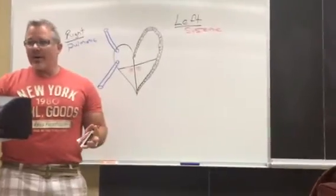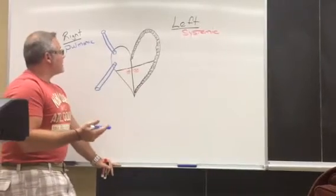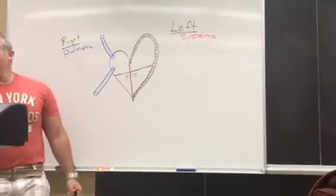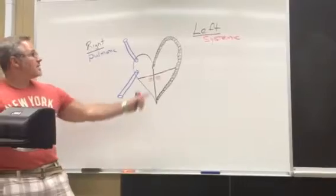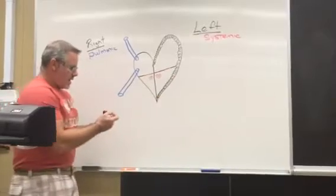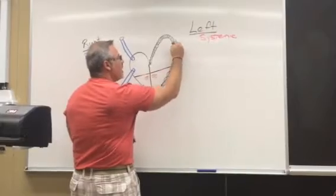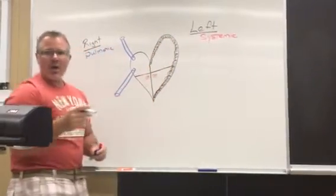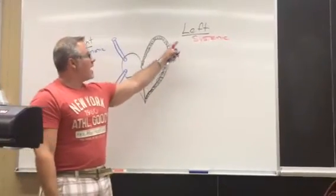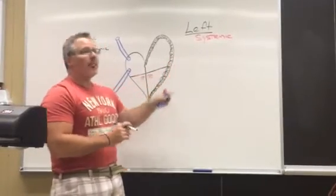Looking at the drawing on the board, from anatomical position, the left side of the heart looks larger and the right side looks smaller. The left side is larger because I intentionally drew the myocardium thicker on the left than on the right. That's because the left side is considered systemic circulation — it's designed to pump blood to all the systems of the body.